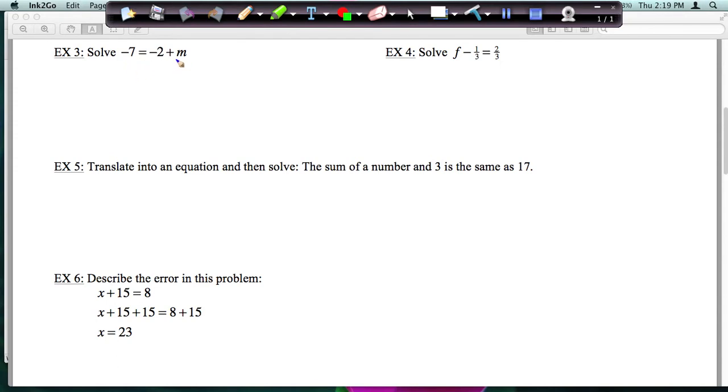The goal is to get this variable m by itself. So I'm going to look at the term next to the m, which is a negative 2, and I'm going to take the opposite of negative 2, which is a plus 2, because those will cancel out then. So I'm going to add 2 to both sides of the equal sign.